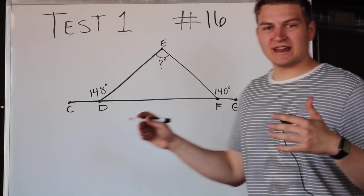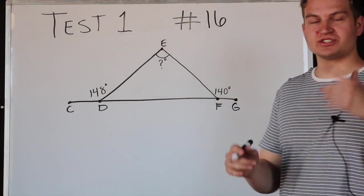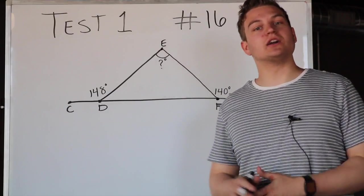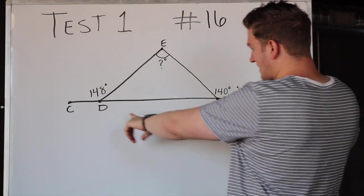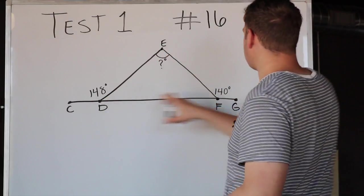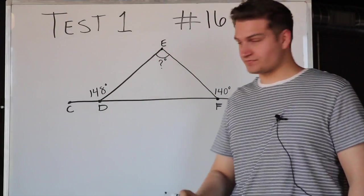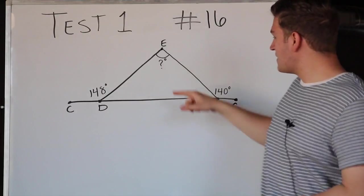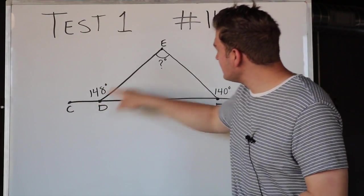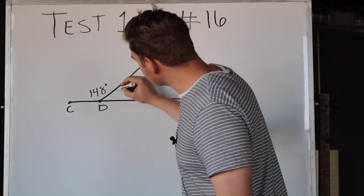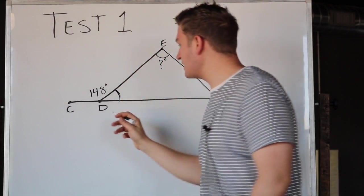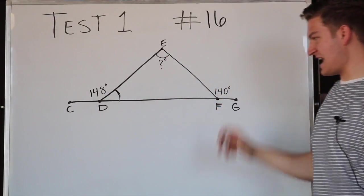So basically what a supplementary angle is, it's two angles that add up to 180 degrees. If I look at these two angles down here, EDF and EFD, I notice that we are given CDE, and we need to find this guy right here, angle EDF.